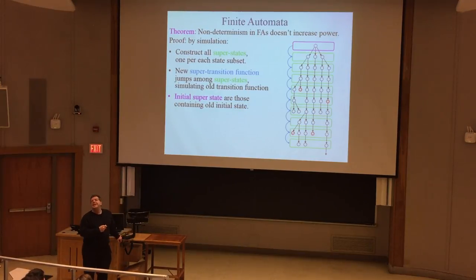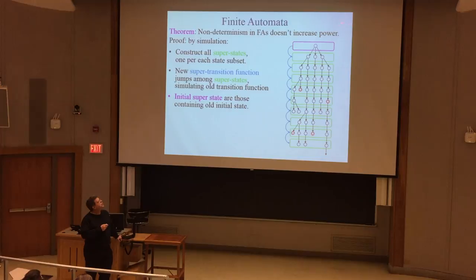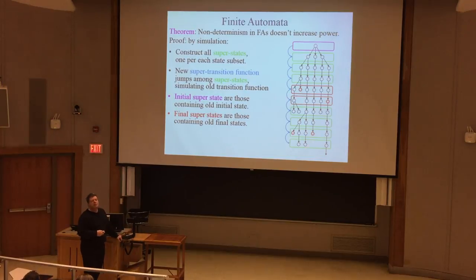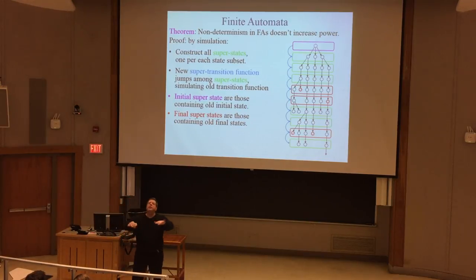The final super states are those where at least one component state is a final state - because acceptance requires only one path to succeed, not all of them. Think of it like venture capitalists funding multiple companies: as long as one becomes Facebook or Google, that more than pays for all the others. One success in the group makes the whole group a success.